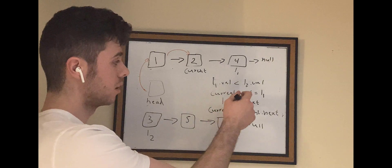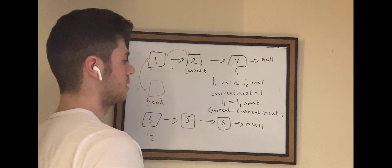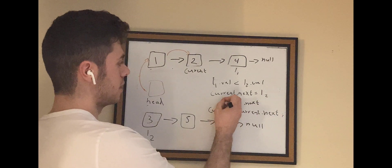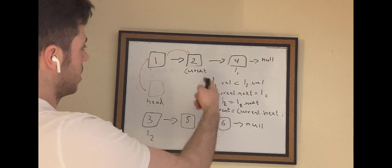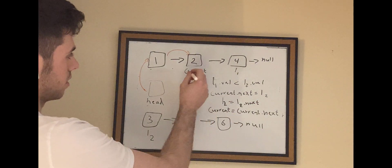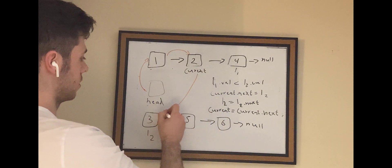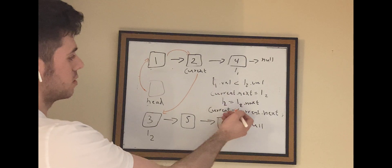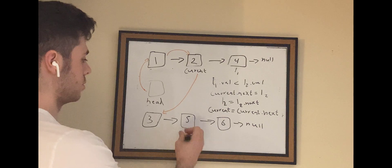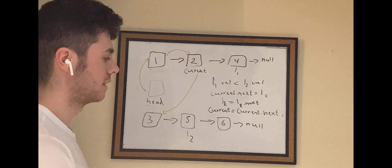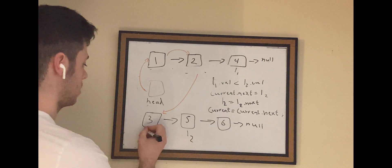So we do the same thing but we switch to L2. Current.next is going to be equal to L2, and then L2 is going to be equal to L2.next. So the next node after current is going to be equal to L2, which is 3. Then L2 advances to L2.next, and current is updated as well.